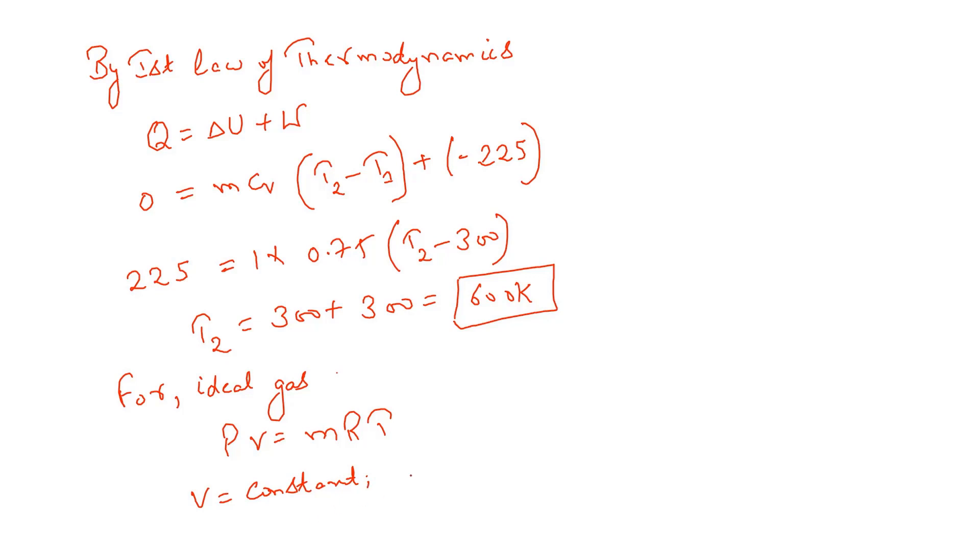Since V is constant, then according to the ideal gas law, the formula would become P2 by P1 is equal to T2 by T1, which states that P2 by 1 is equal to 600 by 300. So if this cancels out,